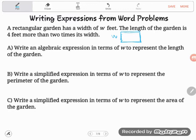Take a look at part A. This is what Teresa sent me. It says write an algebraic expression in terms of W to represent the length of the garden. So your expression is going to have a W in it and it needs to represent the length. What do we know about the length? The length of the garden is four feet more than two times its width.